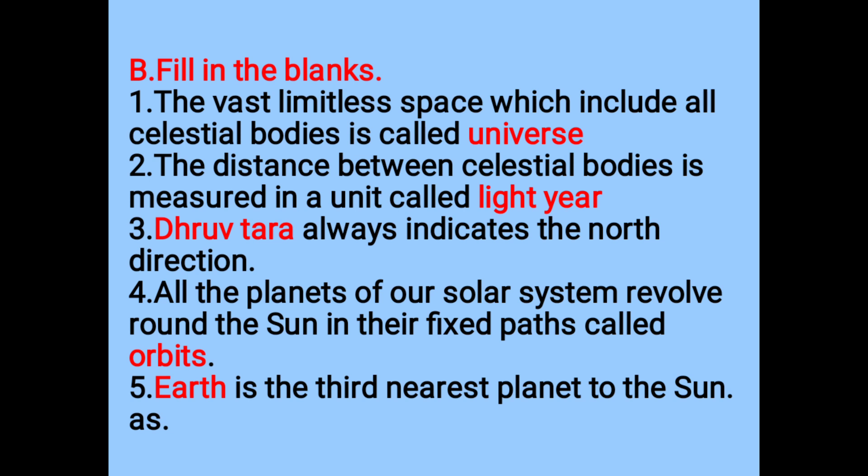Dash always indicates the north direction — Dhruv Tara or Polestar, you can read both of them. All the planets of our solar system revolve around the Sun in their fixed path, called orbit.